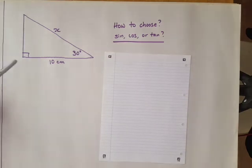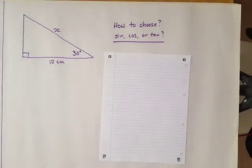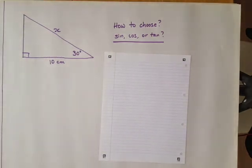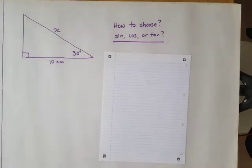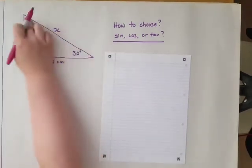When we decide if it's sin, cos, or tan, the first thing you have to do is label the sides. The longest side is the hypotenuse, so I'm going to write that down. The hypotenuse is the longest side.